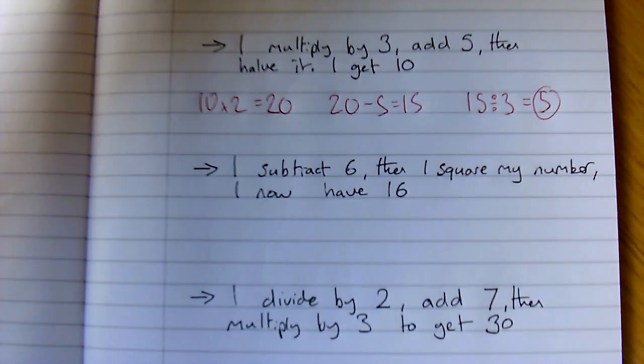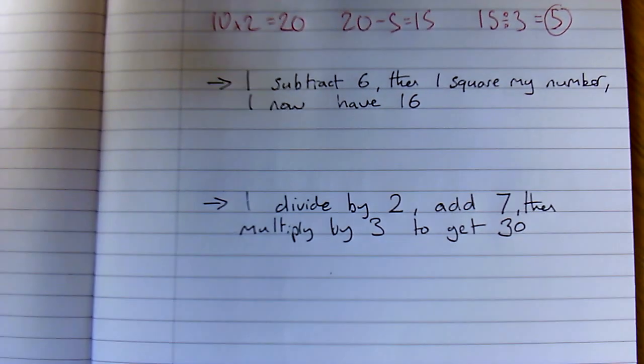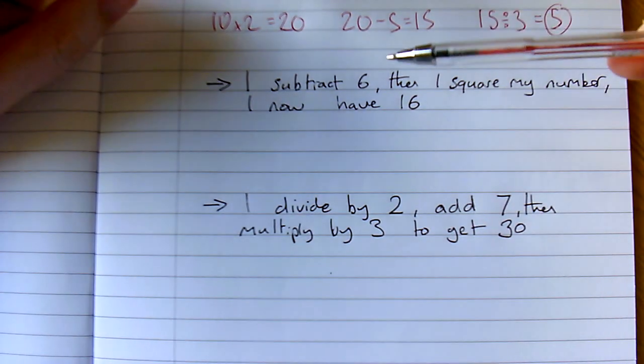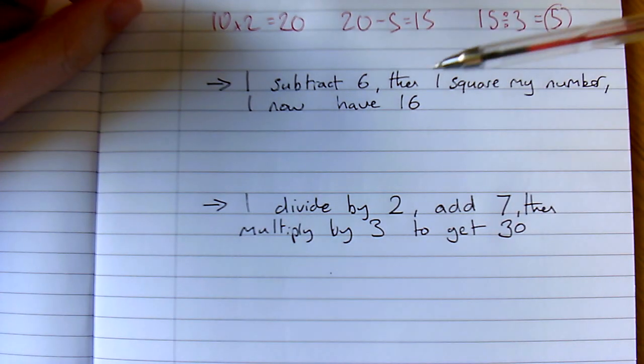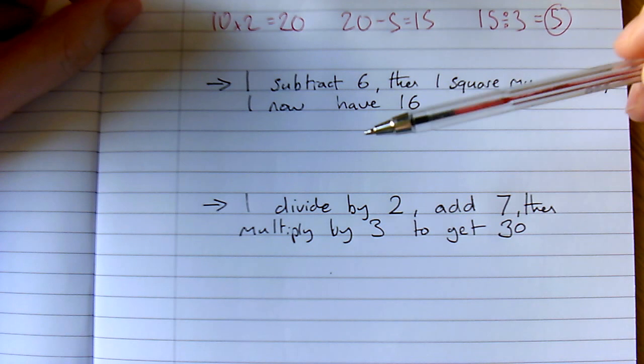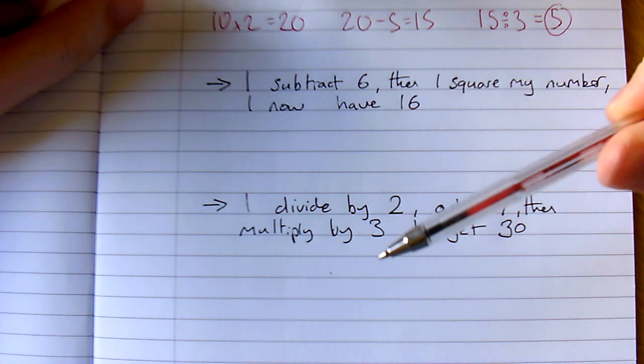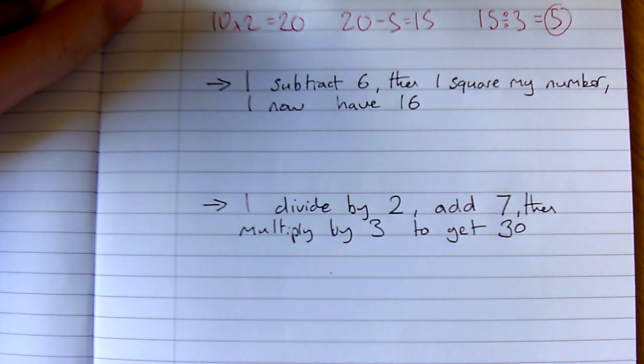Now two more examples to show you. So I subtract 6 and then I square my number. I now have 16. Well, a little trickier here. I've squared my number so I've times it by itself to get 16.